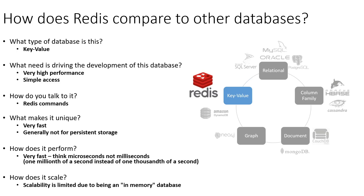Redis is designed to operate with a very high level of performance. As mentioned before, Redis — and to a lesser extent DynamoDB — aren't as much focused on big complex relationships, but they are focused on being extremely fast.